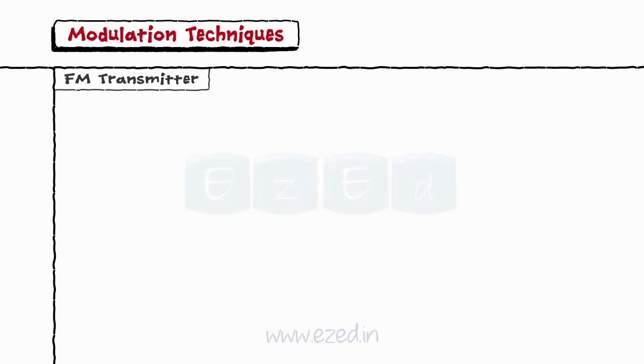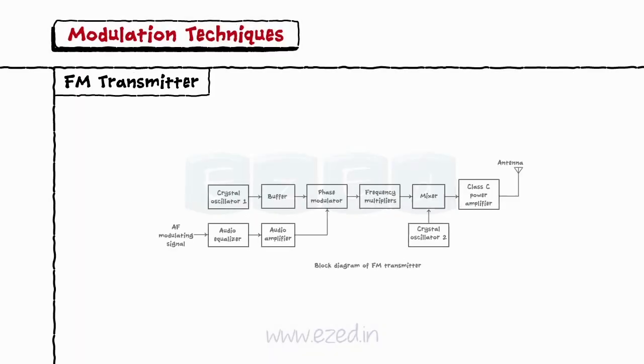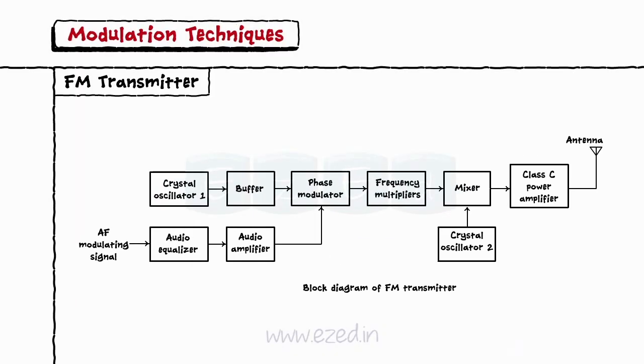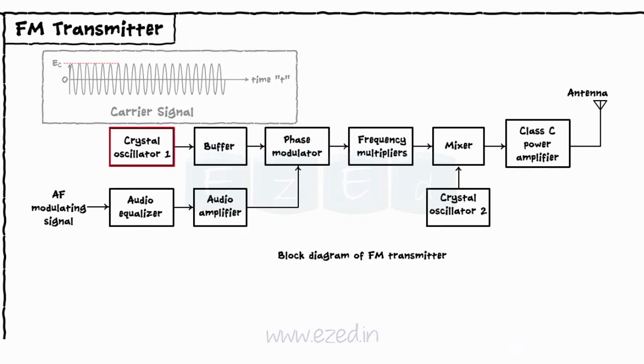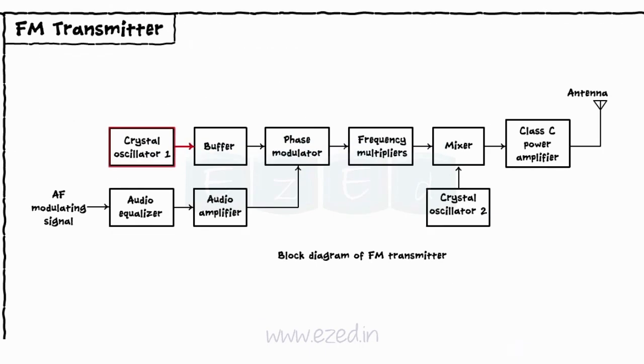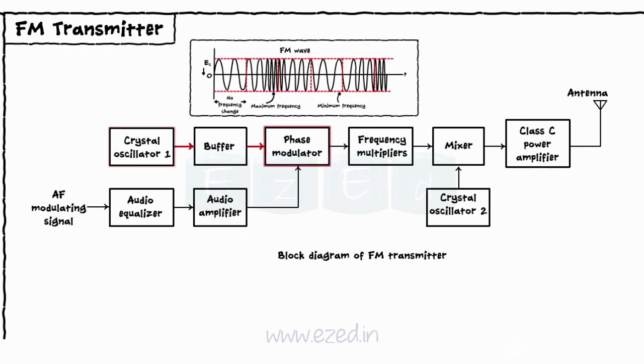Now let's study the FM transmitter. FM also uses the crystal oscillator to generate the carrier signal. This carrier is then applied to a phase modulator.